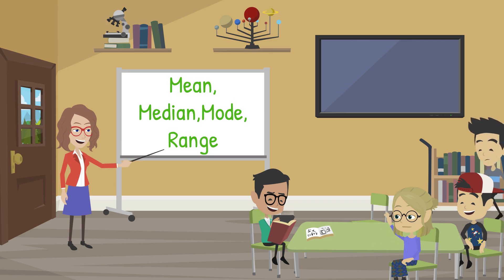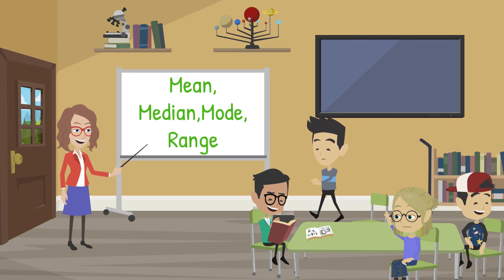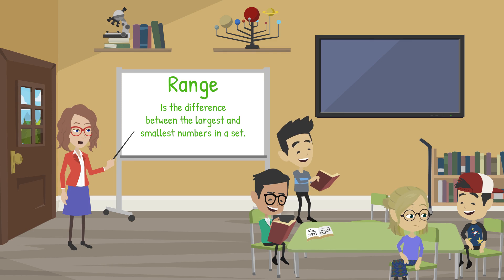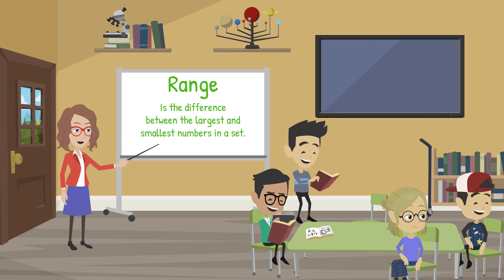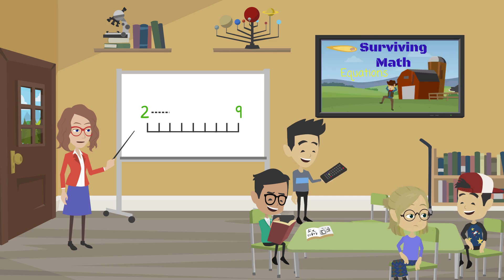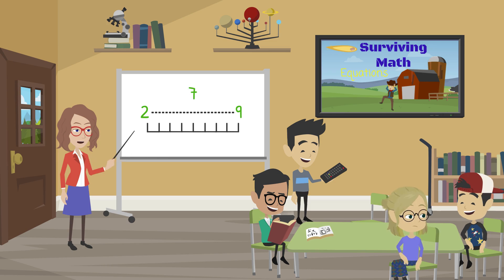Ma'am, you didn't mention the range. Thank you for noticing. The range is simply the amount between the largest and smallest number. For example, if the highest number in a set was 9 and the lowest number was 2, the difference between 2 and 9 is 7 — that's the range.